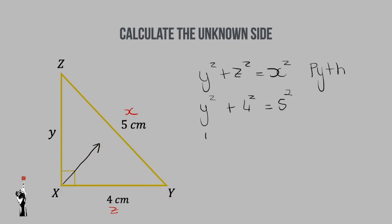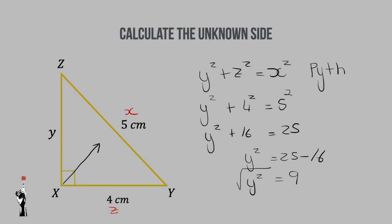So we have Y squared plus 16 equals 25. Therefore Y squared equals 25 minus 16, giving Y squared equals 9. We don't want Y squared, we want Y, so we take the square root of both sides: the square root of 9 gives Y equals 3. Don't forget to write your units — this time the units are centimeters.